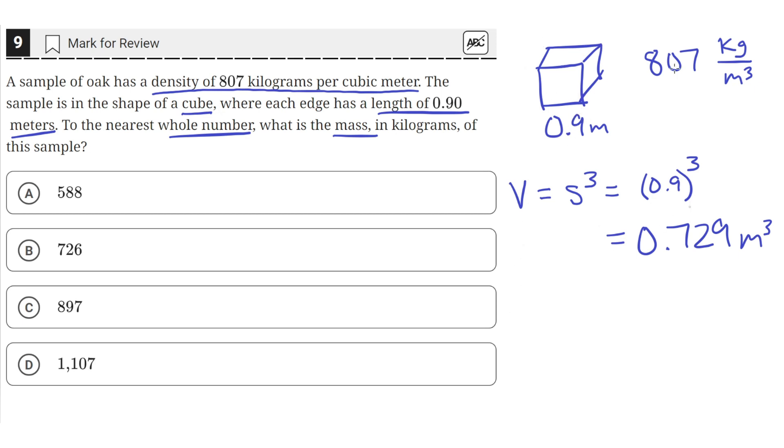And we are given that for every meter cubed of a sample of oak, there are 807 kilograms of oak. So multiplying the volume of this cube with the density should give us the total mass of this cube.